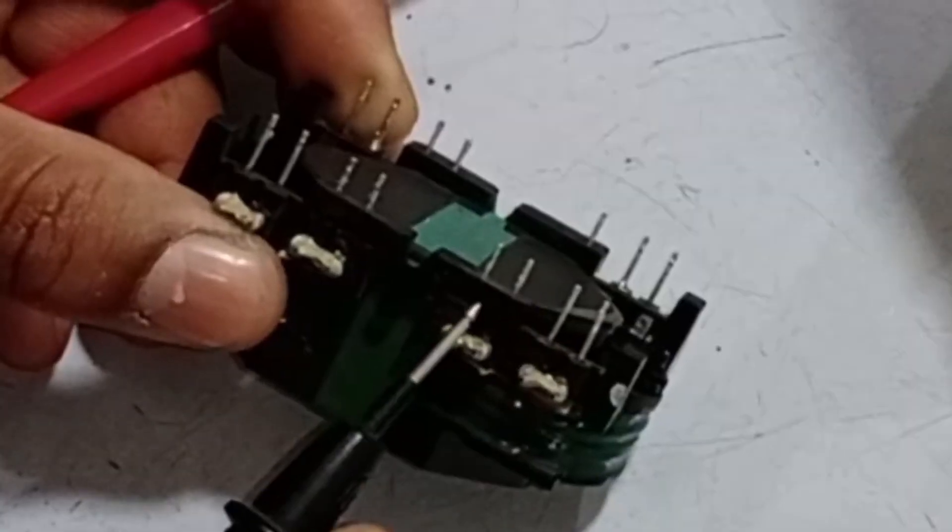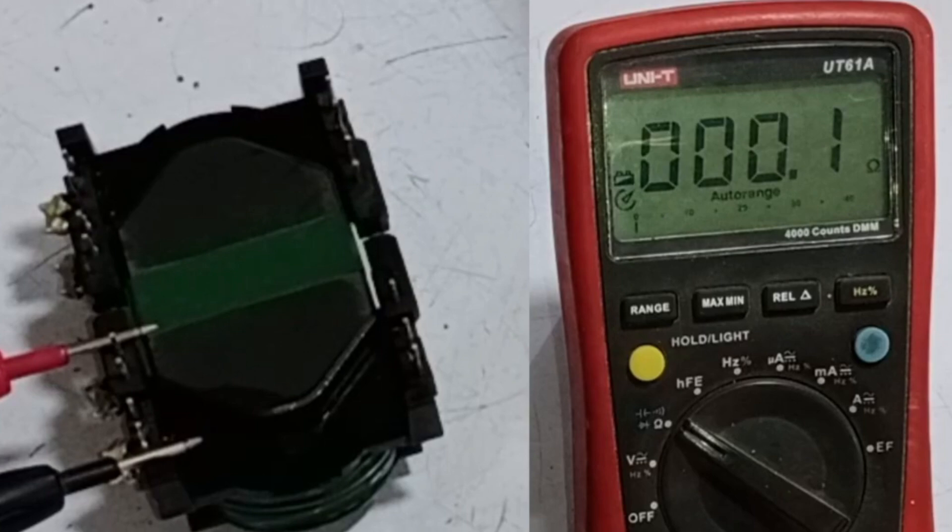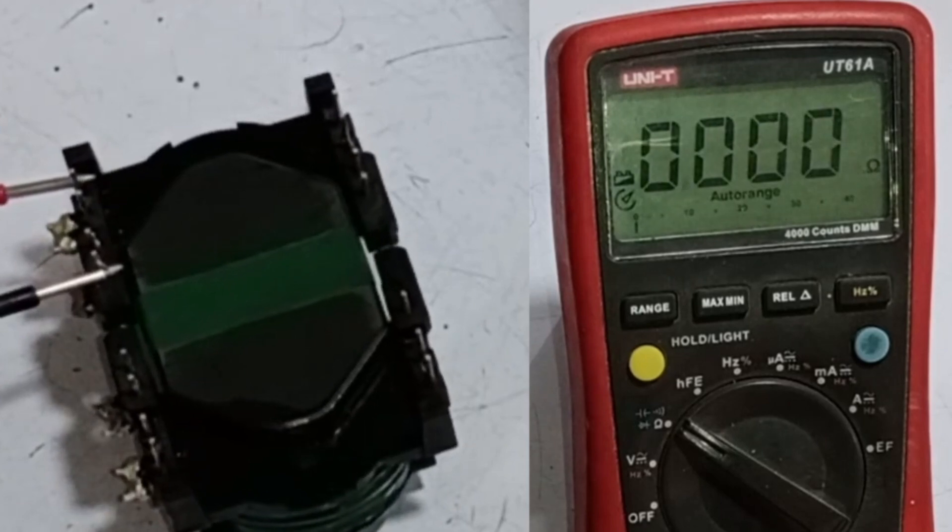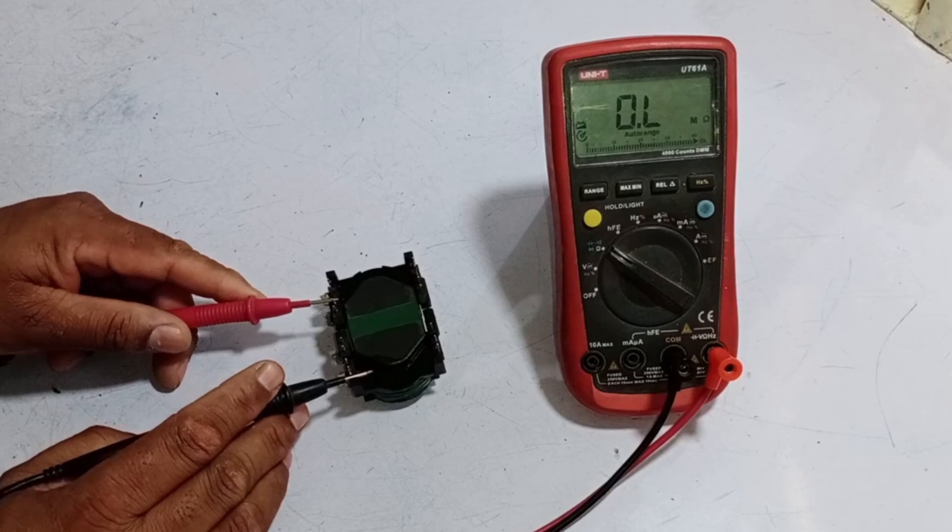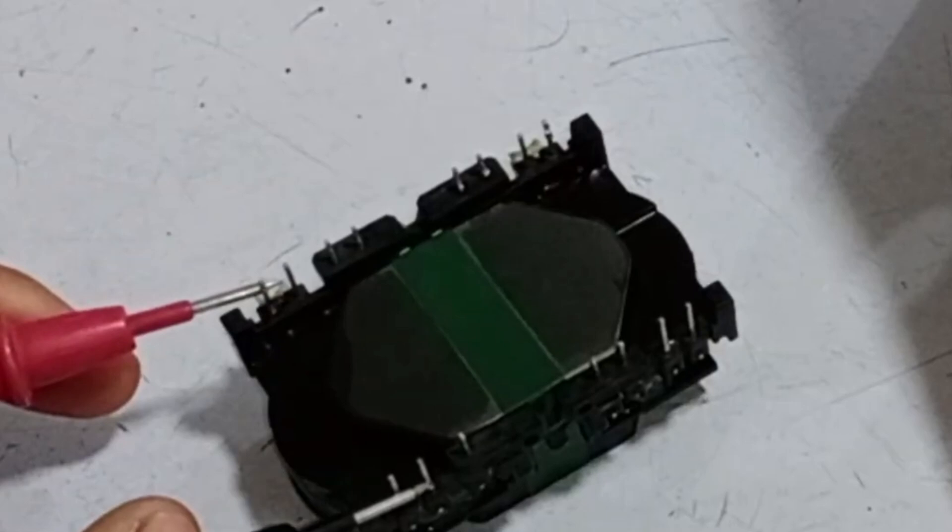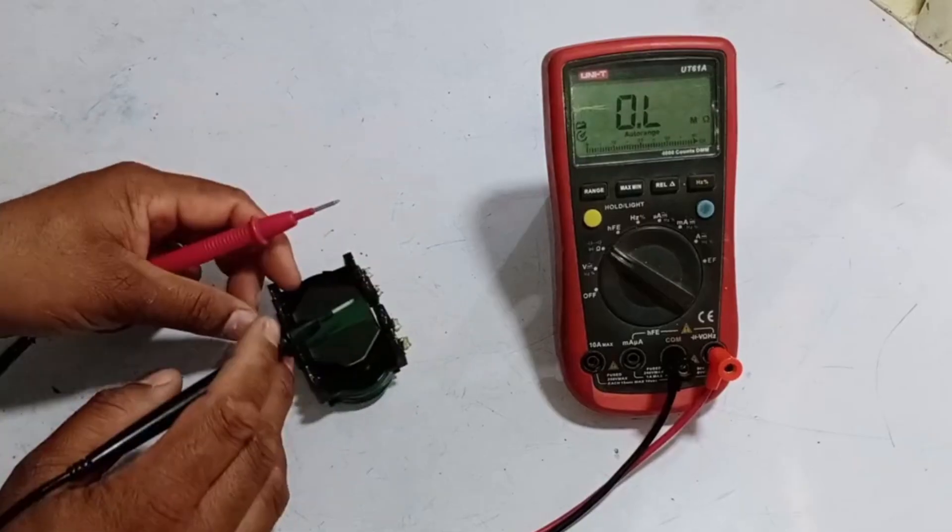First, we will check the points with the thick wires. These wires should have a small amount of resistance. As you can see, it shows a resistance of 0.2 ohms. Similarly, if we check the next point, it also has resistance in the same range. There should be no short circuit between these wires, and additionally, there should be no short circuit between these wires and the other wires. In other words, these are four separate coils, each working independently.